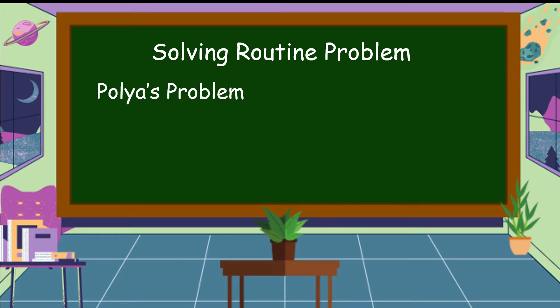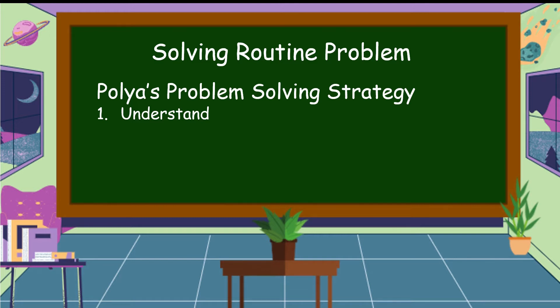We are going to use Polya's problem-solving strategy. We have four steps. Number one, we understand the problem — we should know what is asked and what are the given facts. Next, we plan — what strategy or operation to use. Then we solve, or carry out the plan. And last, we look back, or check if we have a reasonable answer.